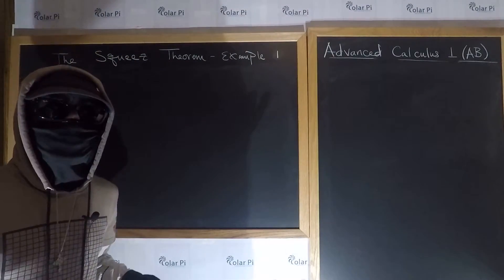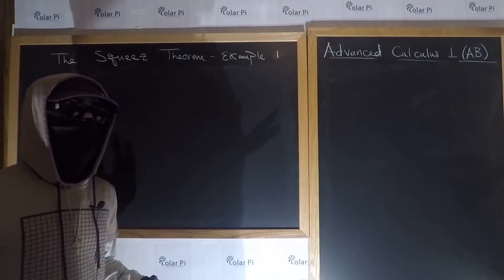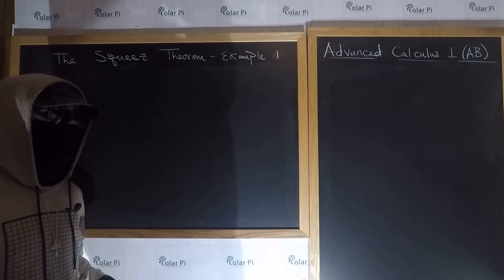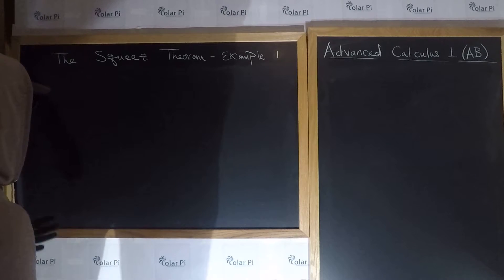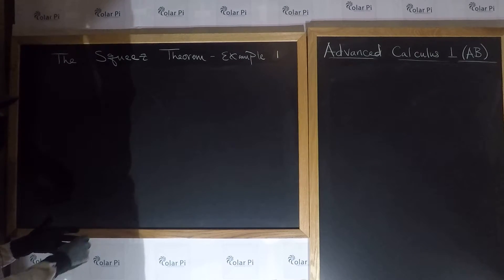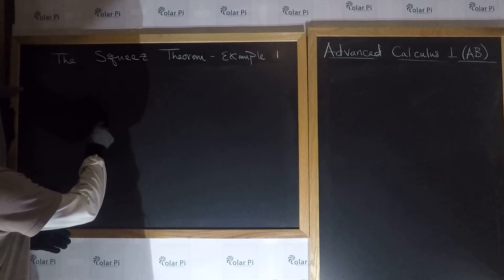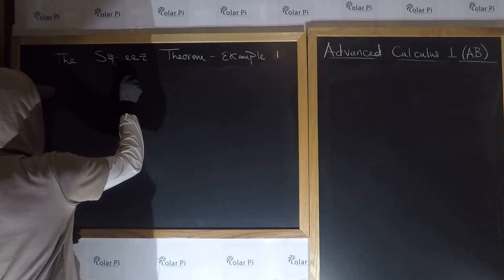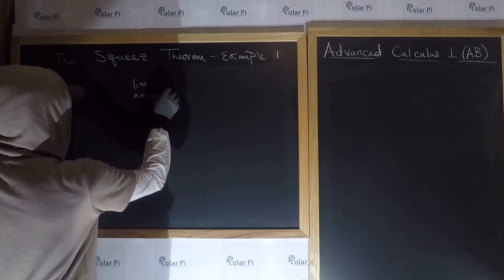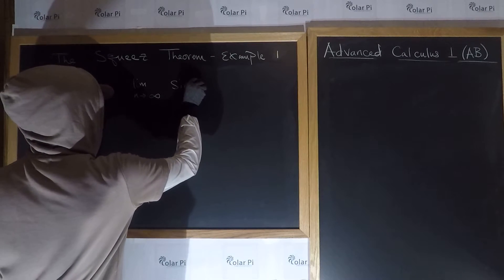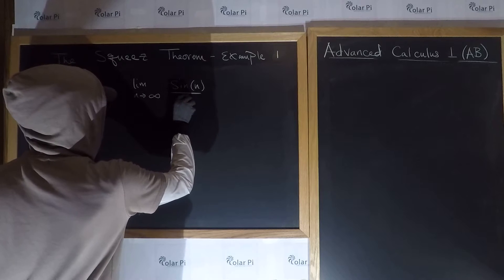But yeah, in this video I'm going to show you a limit that's very similar to the one we looked at in example 0, but as n goes to infinity as opposed to n going to 0. And of course, I'm talking about sine n over n. So here we're going to try to figure out what the limit as n goes to infinity of sine n over n has to be.